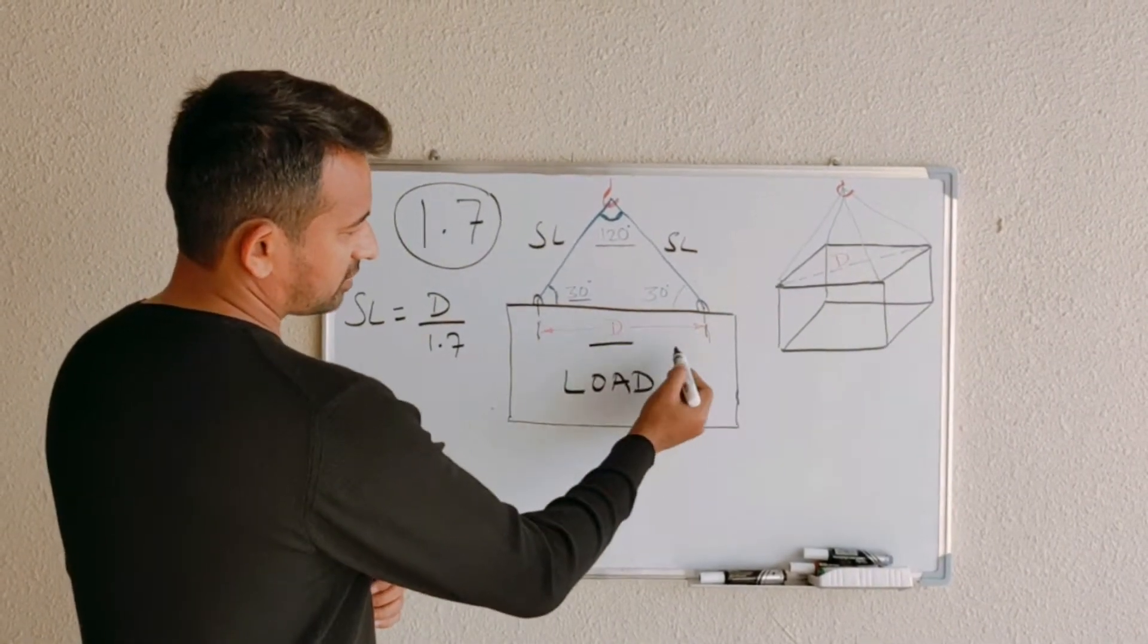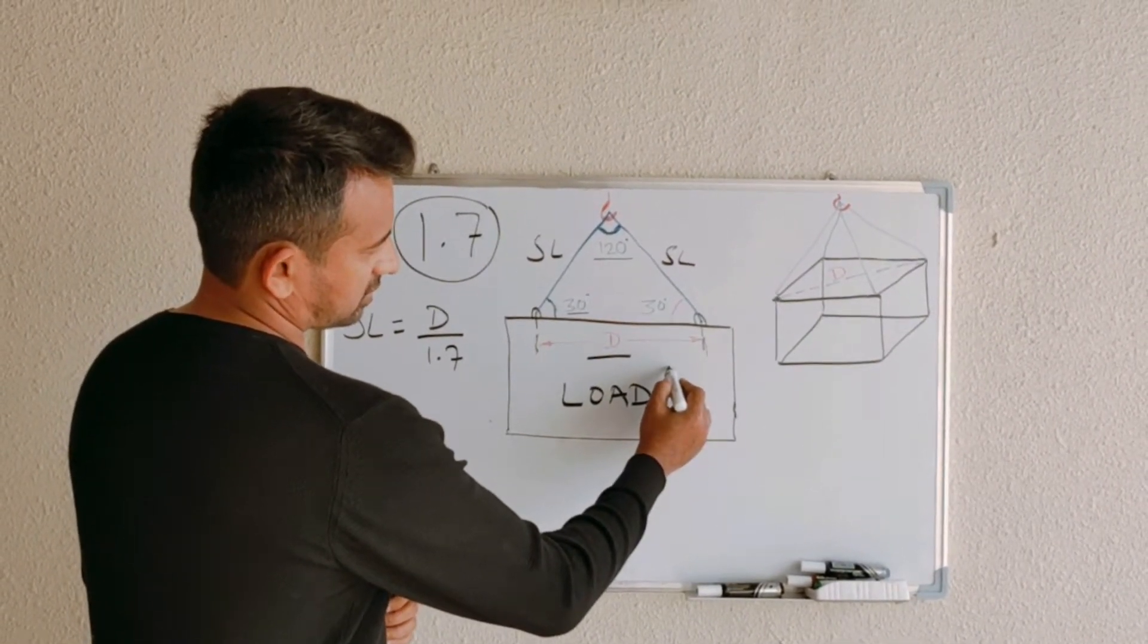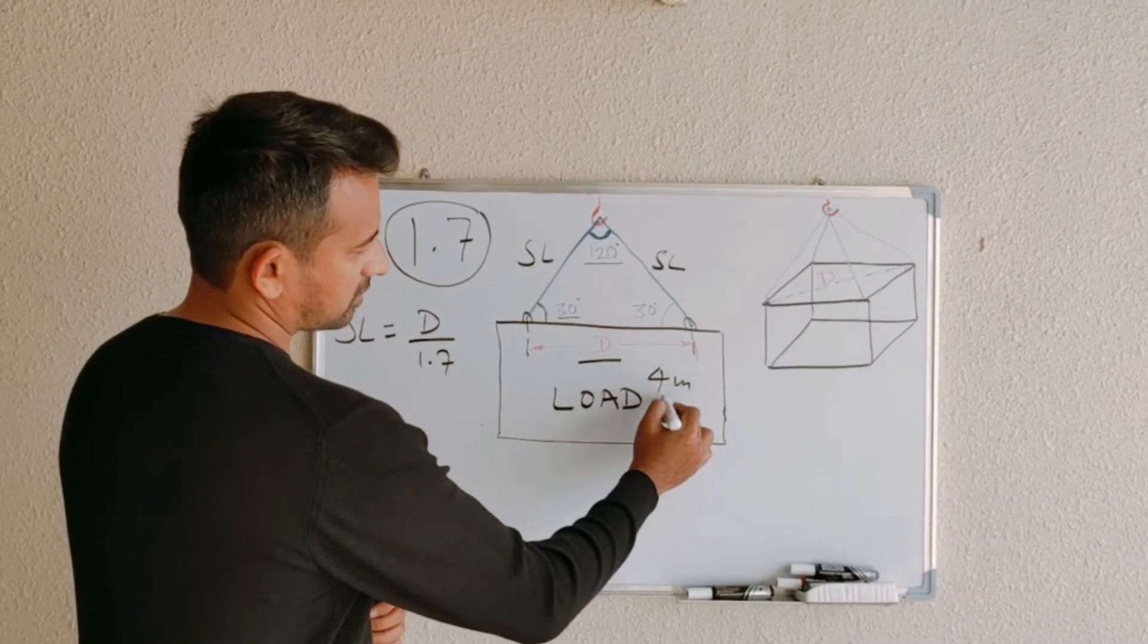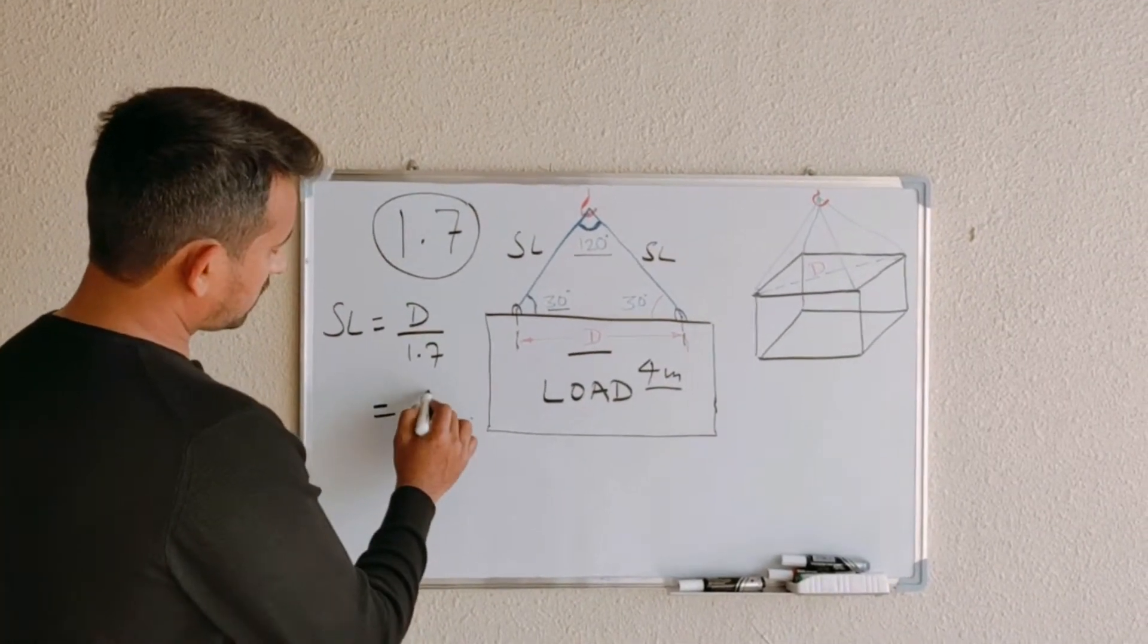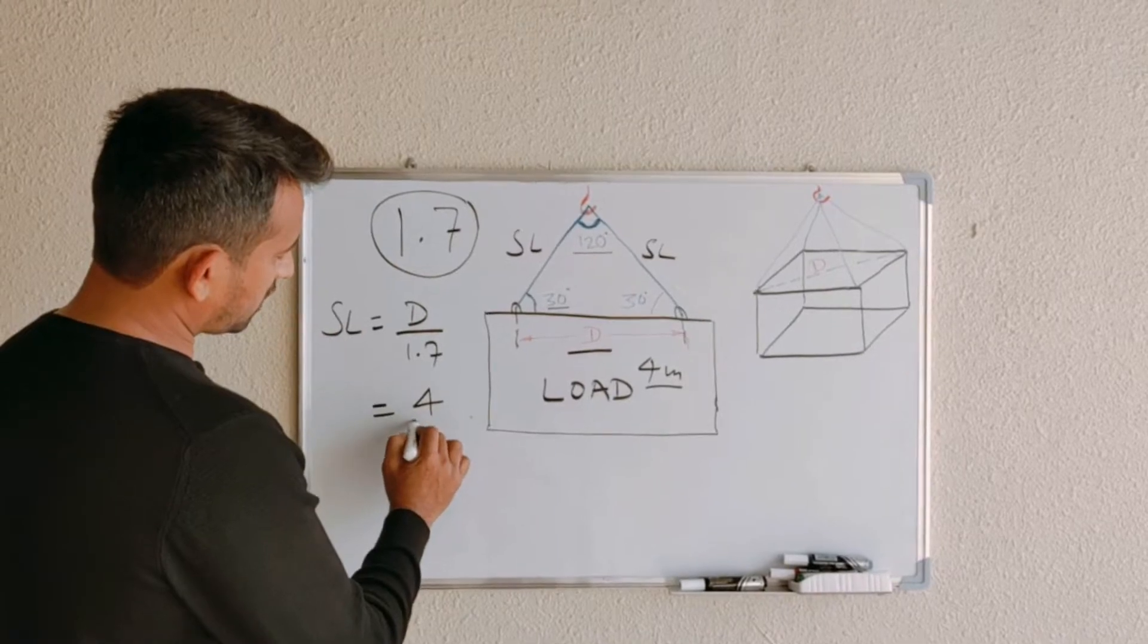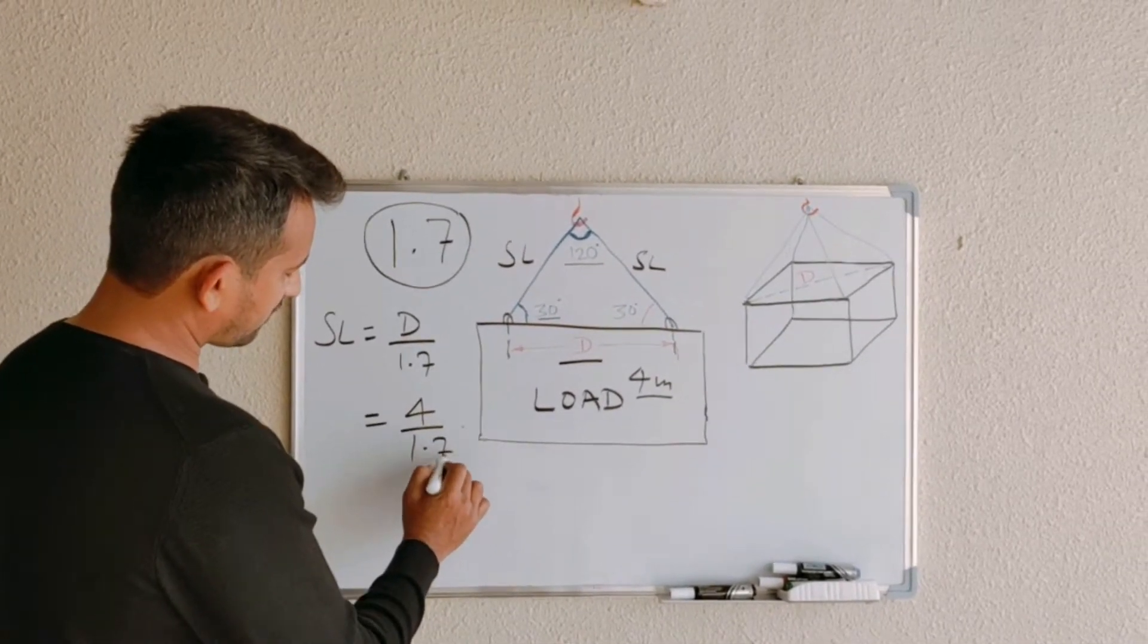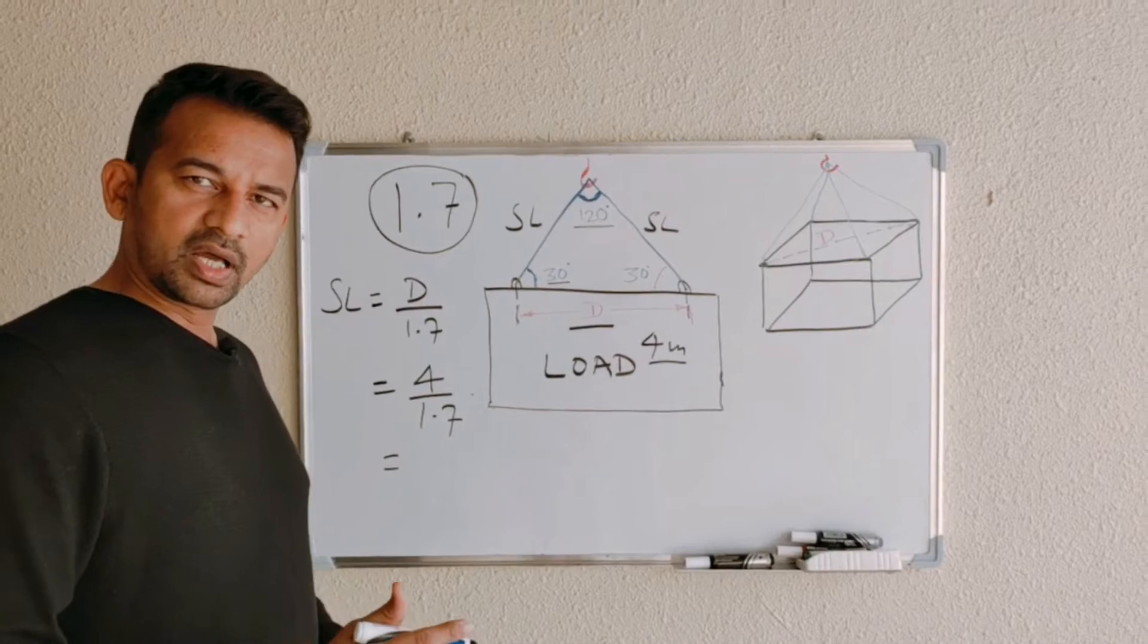Let's take an example. D equals 4 meters. So distance will be 4 meters divided by 1.7, and when you calculate it, you will get the answer 2.36 meters.